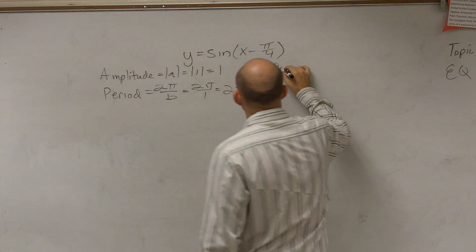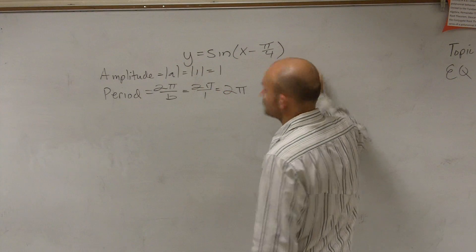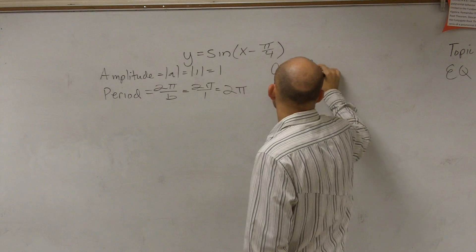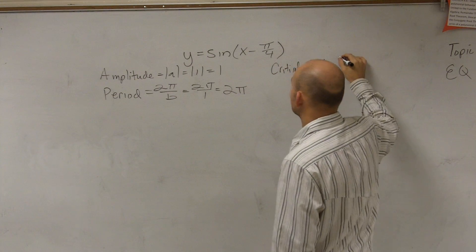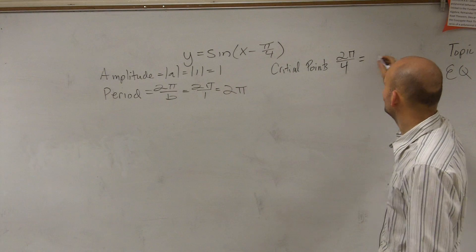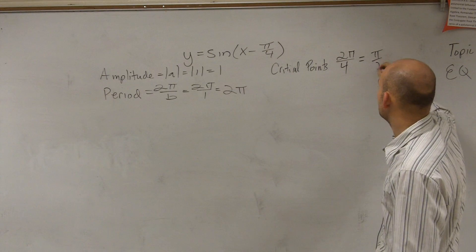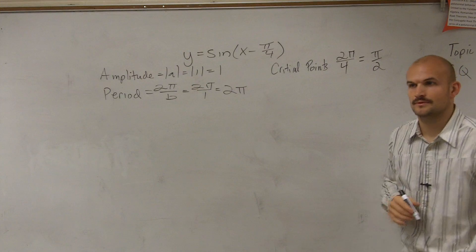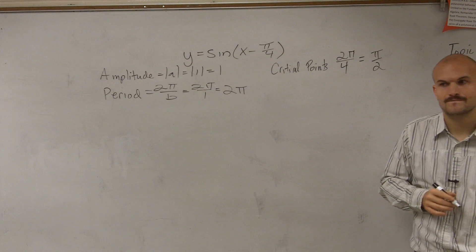The next thing is let's find our critical points. Or not really the critical points, but the distance between the critical points. So the distance between the critical points is, remember, you take your period and divide it by 4, which in this case, we're going to have π halves.